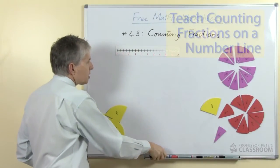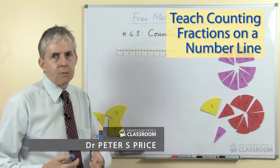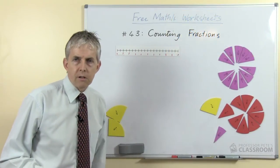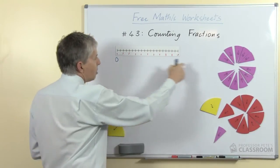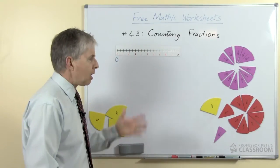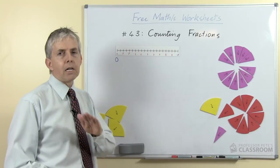Now with the number line, the students will hopefully be familiar with the number line using other numbers, using whole numbers. They're used to counting along the line. We usually have a zero here and we're moving in this direction and we're going to add one every time. Only this time we're not going to add one whole, but we're going to add a fraction.